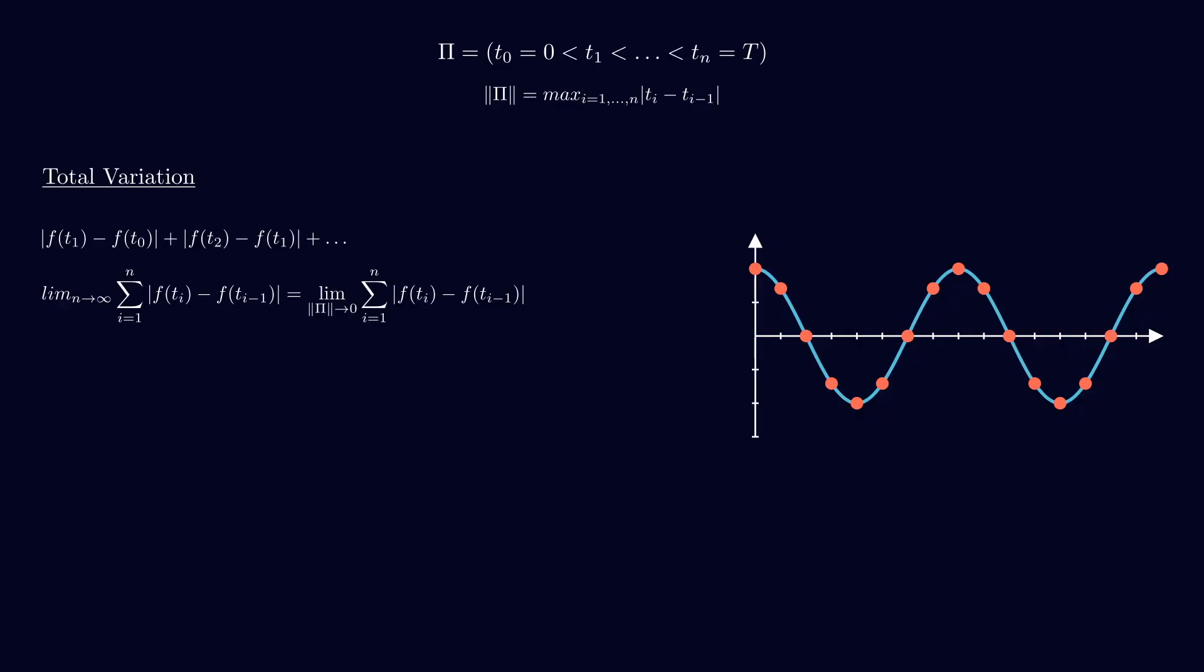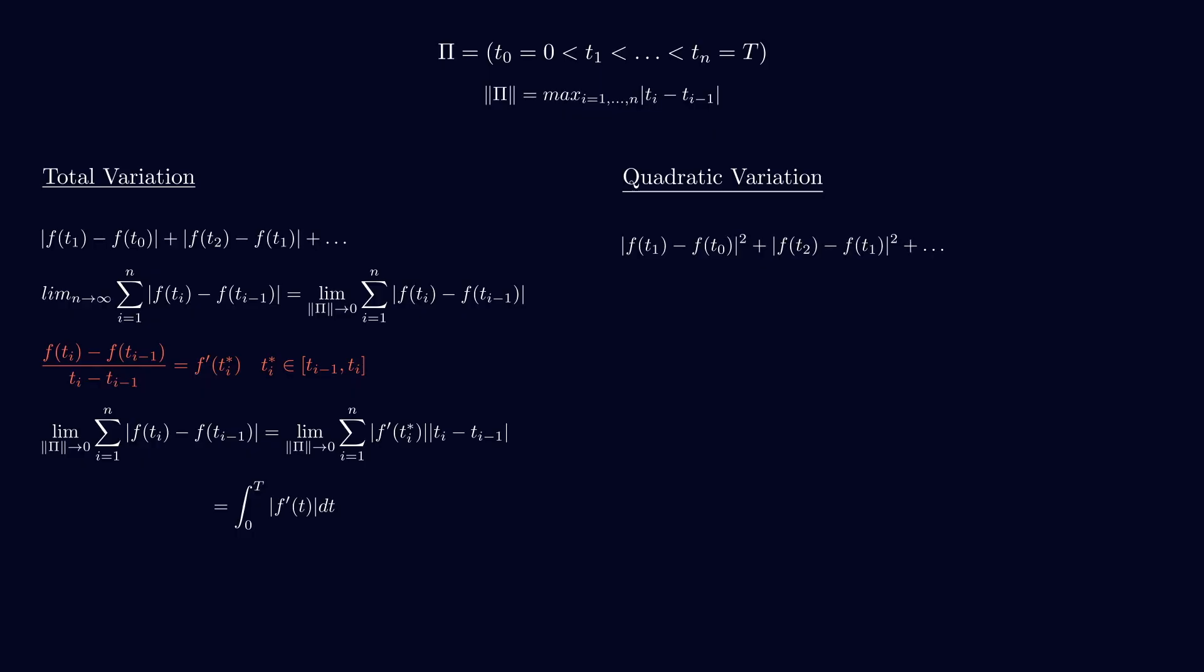Then, let's suppose for a moment that the function is differentiable. We can use the mean value theorem. And as the mesh goes to 0, we can see that if the function is differentiable, the total variation is equivalent to the integral of the derivative. Okay, now let's look at the quadratic variation. Instead of taking the absolute value of the differences, you square them. And what is really important here is that if the function is differentiable, the quadratic variation is equal to 0.